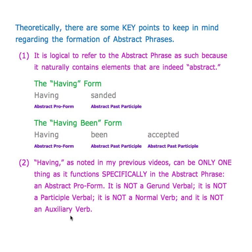There are key points to keep in mind regarding the formation of abstract phrases. First, it is logical to refer to the abstract phrase as such because it naturally contains elements that are indeed abstract: the abstract pro form, and sanded as an abstract past participle. With the having been form, you still have your abstract pro form but now you have your first abstract past participle and then your second one — a beautiful thing if you think it through.